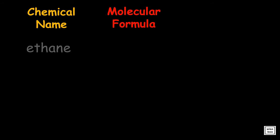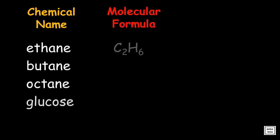Here are examples of molecular formulas. In this instance, notice that ethane has two carbon atoms and six hydrogen atoms, while butane has four carbon atoms and ten hydrogen atoms, and so on.